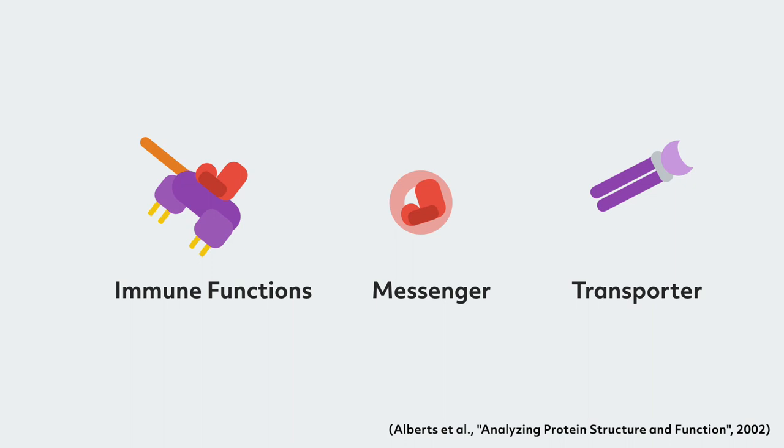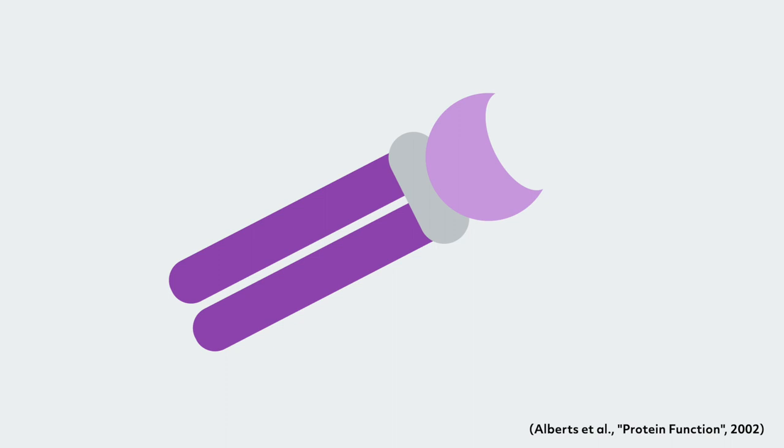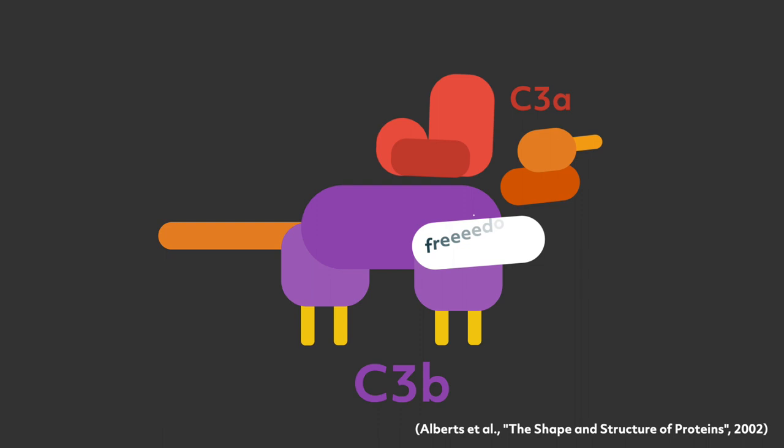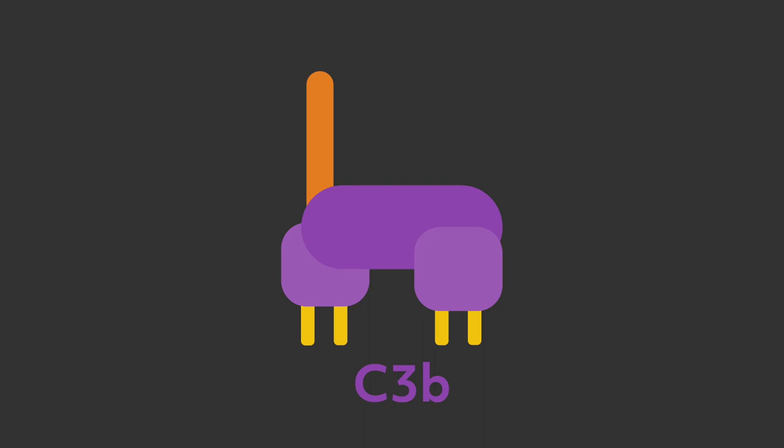Shape determines what you can interact with and in what way. For example, the transport protein can only transport substances that can fit into its shape. Proteins can also change the shape of other proteins, which can either activate, inactivate, or change their functions.